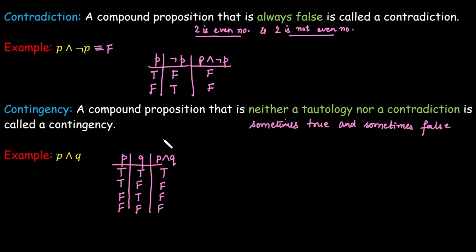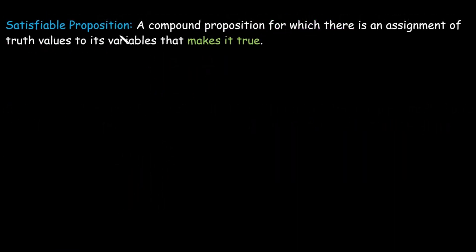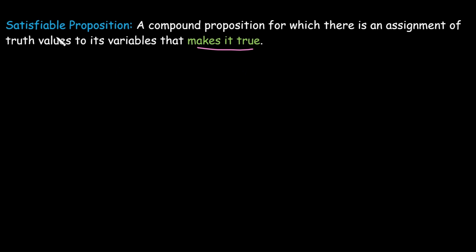Moving to the next definition: satisfiable proposition. A compound proposition for which there exists an assignment of truth values to variables that makes it true is called a satisfiable proposition. It means if we get even one single true result in any of the possible cases, we are satisfied and that proposition is called satisfiable.